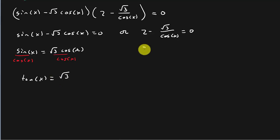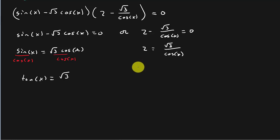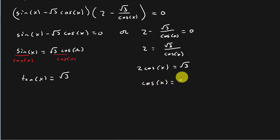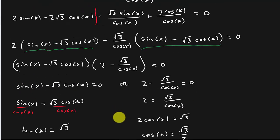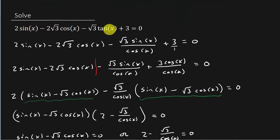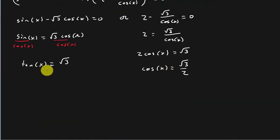Now let's solve the second one: 2 equals square root of 3 over cosine x. Multiply by cosine x — so that's 2 cosine x equals square root of 3. Divide by 2: cosine x equals square root of 3 over 2. Just remember, whenever you're solving trig equations, the key is to get a trig function equals a number. I went from that messy expression, factored it, and ended up with these. Now we solve each one individually.